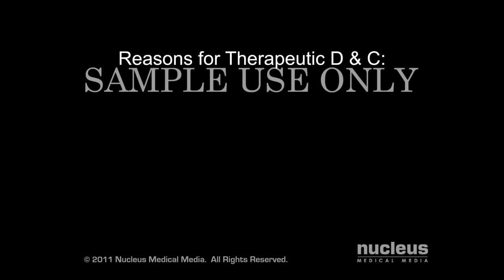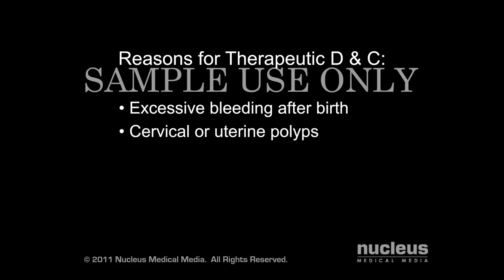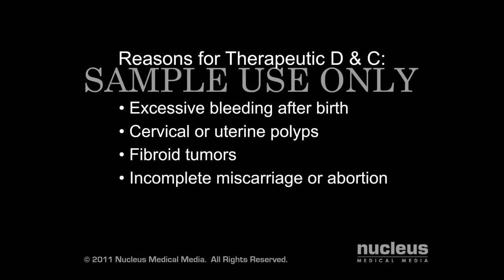A therapeutic D&C may be performed to treat certain uterine conditions, such as excessive bleeding after birth from remnants of the placenta, cervical or uterine polyps, fibroid tumors, which are benign tumors formed on the uterine wall, and incomplete miscarriage or abortion, in which parts of the embryo or fetus or associated tissues remain in the uterus.